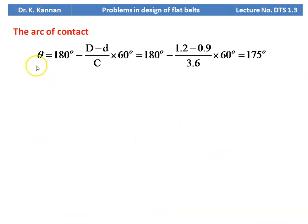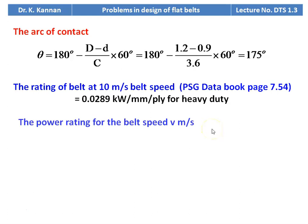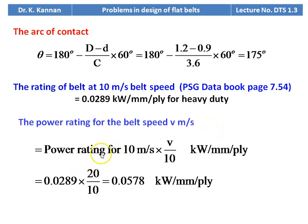Arc of contact: θ = 180 − [(D − d) / C] × 60 = 180 − [(1.2 − 0.9) / 3.6] × 60 = 175 degrees. Power rating of the belt for 10 m/s — heavy duty application: 0.0289 kW/mm/ply. Power rating for calculated belt speed = 0.0289 × (20 / 10) = 0.0578 kilowatt per millimeter per ply.